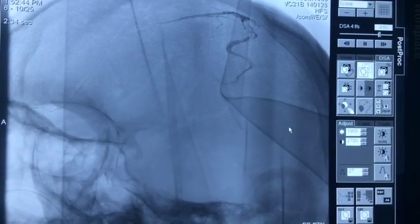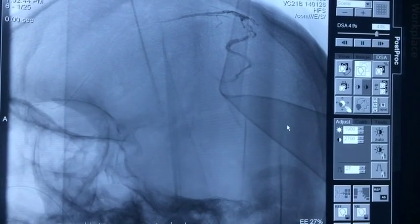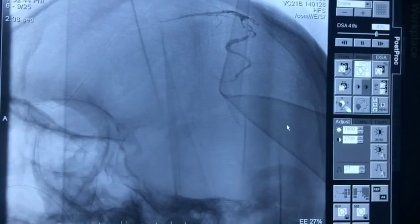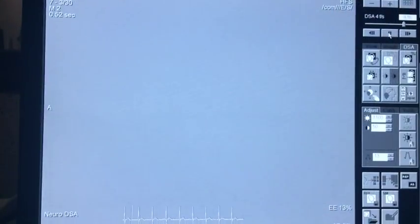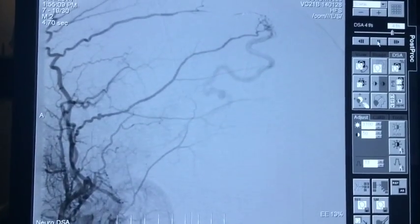You can see the progressive Onyx cast, which is looking absolutely good, right on the fistula with part of the vein and part of the artery. This is halfway through the embolization, which shows that the fistula which was filling from the superficial temporal artery is gone.